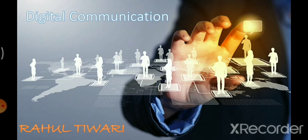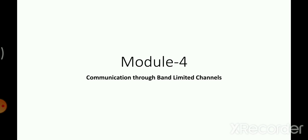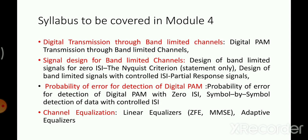We are doing a series of videos on digital communication. Today we're going to start with Module 4: Communication Through Band-Limited Channels. The overall module is divided into four major parts: first, introduction to digital transmission through band-limited channels; second, signal design to overcome related problems; third, probability of error for detection; and fourth, channel equalization.